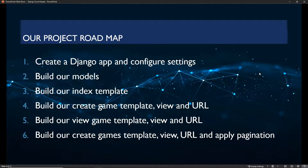Here's the roadmap for our project. We're going to create a Django app and configure our settings. We're going to build our models, which map to the database. We're going to build our index template, then the create-game template for creating a new game with teams and scores — a game will have up to five teams. We're going to create the view-game template so we can see the players, scores, and date.